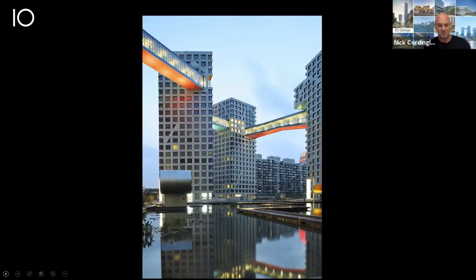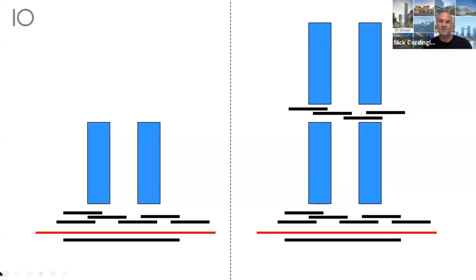Today we are going to review some built examples of social space integrated within the vertical city. This simple diagram illustrates that as cities climb ever higher, the need for new social spaces increases. Traditionally these spaces have been located within the streetscape of the ground plane, extending down to B1 and first floor. As the city evolves vertically, we can already see examples of new social datum appearing within the design of new buildings.